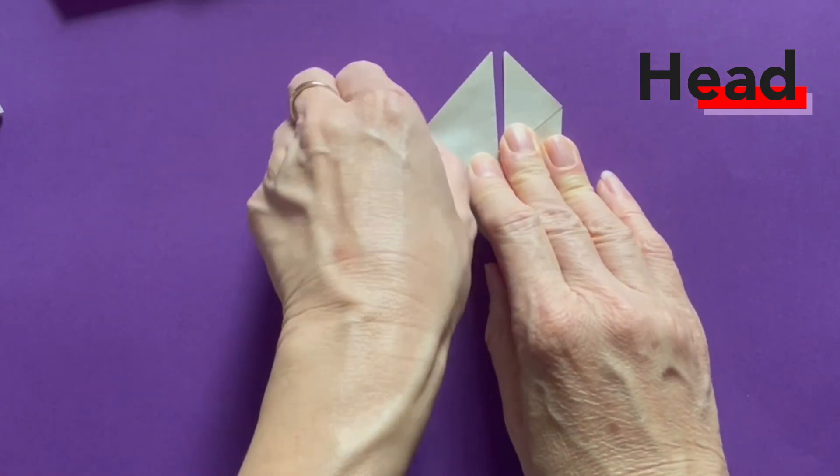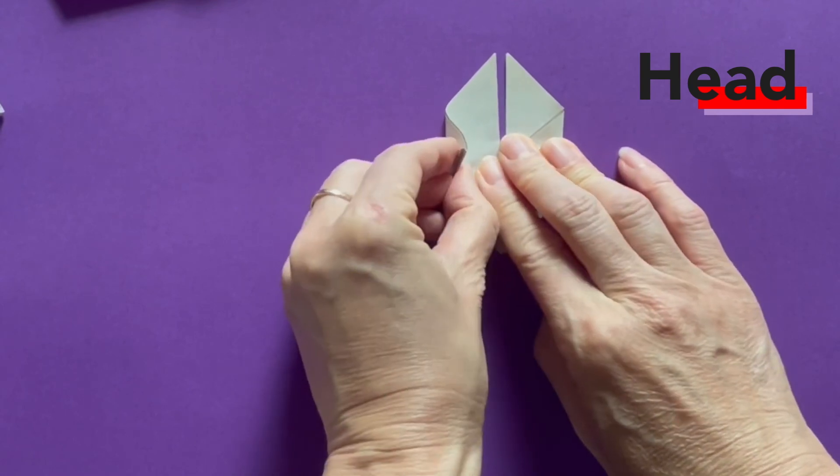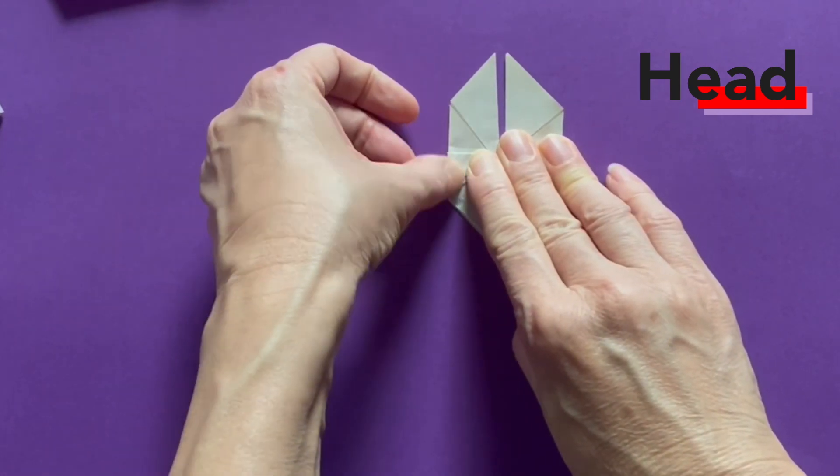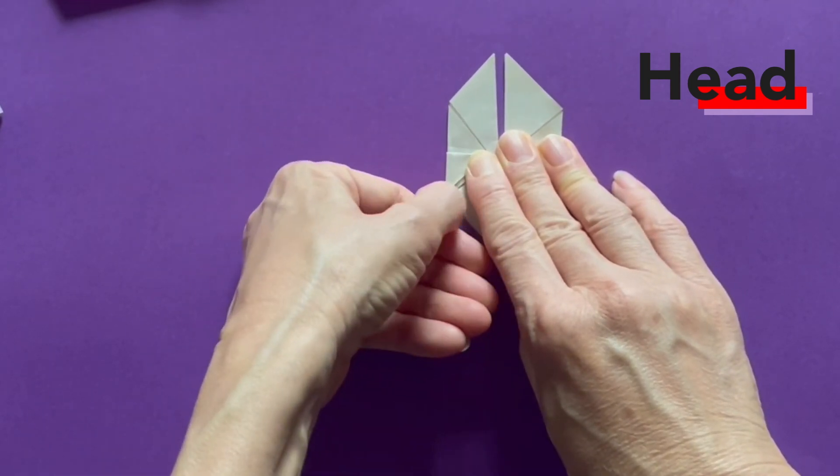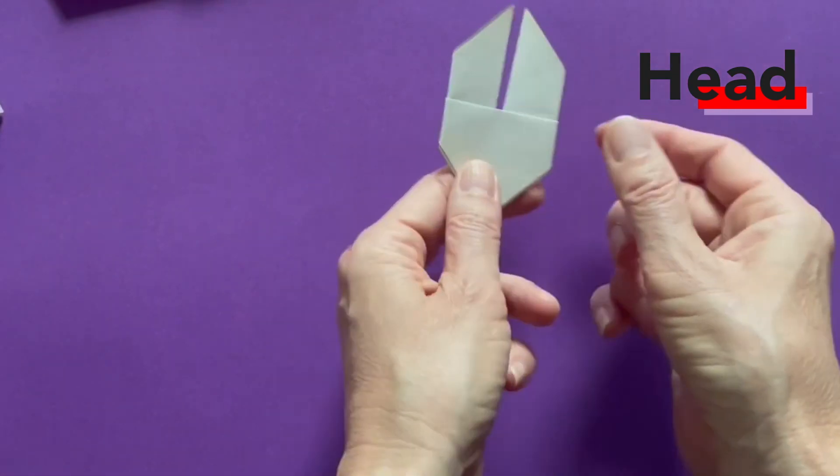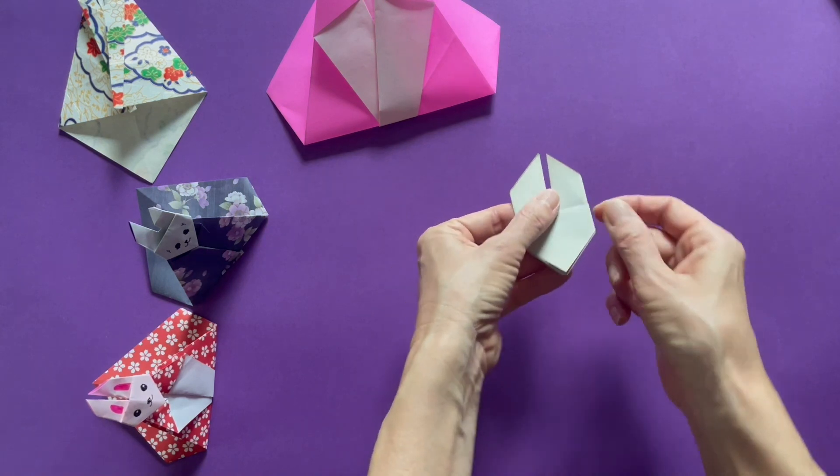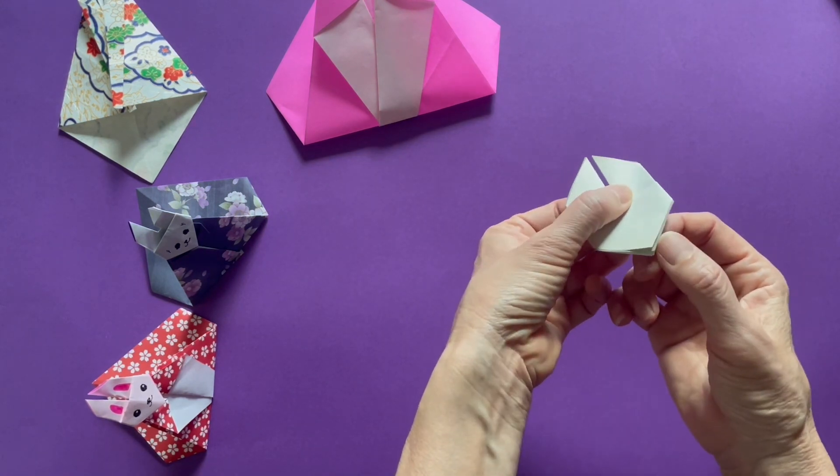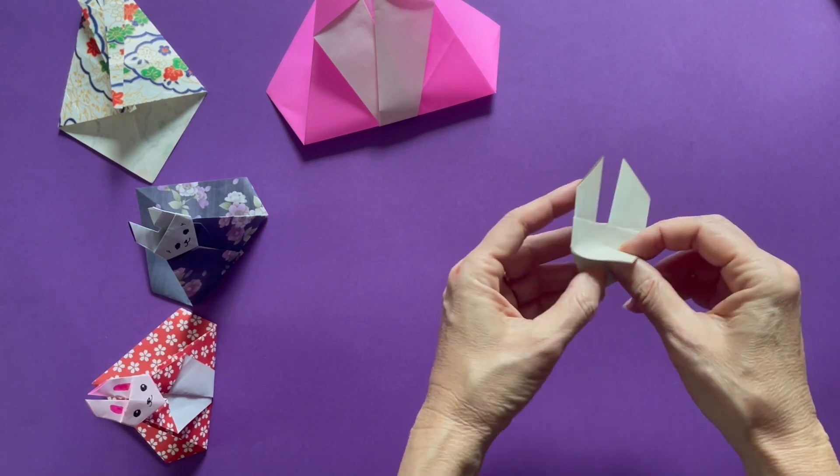By folding, the head becomes skinnier. Turn it over. Now you see. It looks like bunny's head. And on the bottom, there's a pocket. You can use this pocket to be connected with the body.